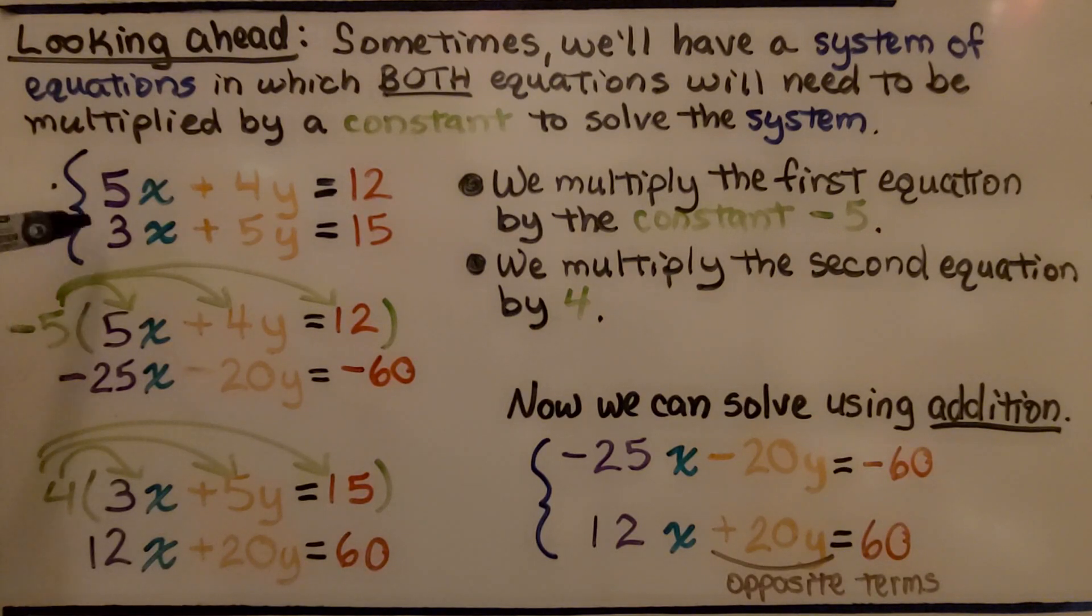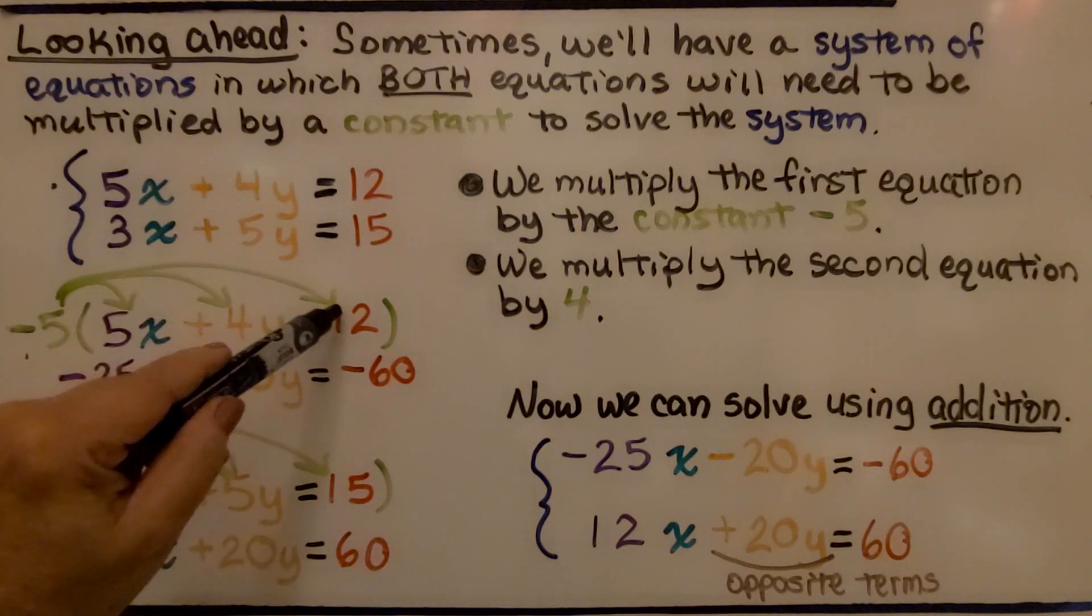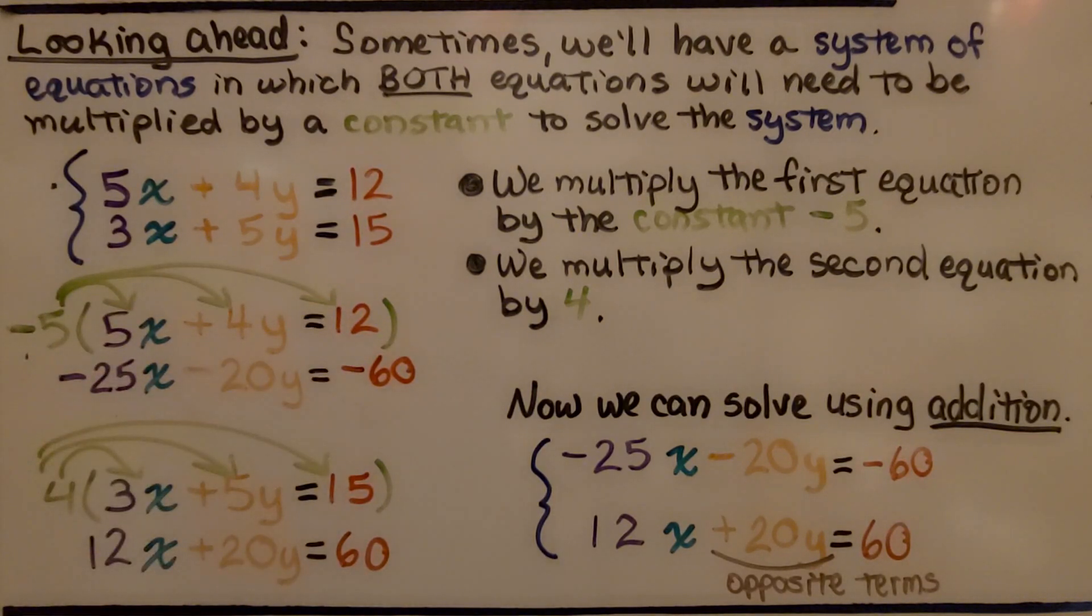So what I'm going to do is multiply this first equation by negative 5, and multiply this second equation by 4. If we multiply negative 5 times 5x, we'll get negative 25x. When we multiply negative 5 by positive 4y, we're going to get negative 20y. Now, for the second equation, we do 4. We have 4 times 3x is 12x, and 4 times 5y is positive 20y, and 4 times 15 is positive 60.